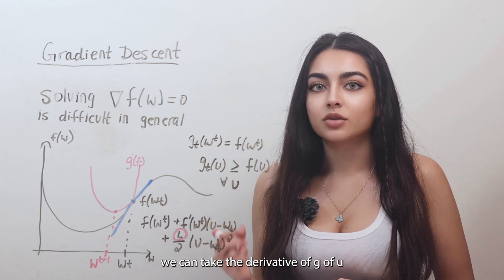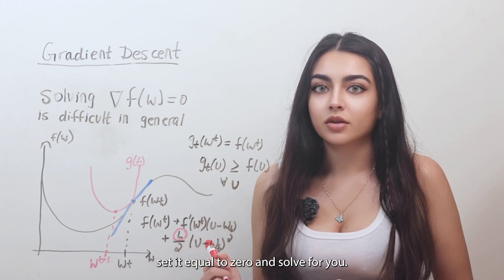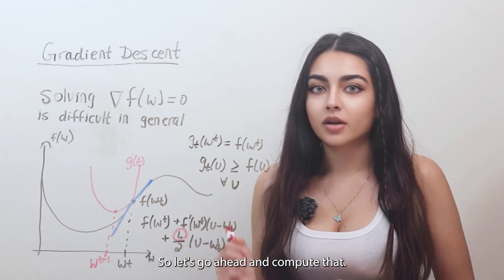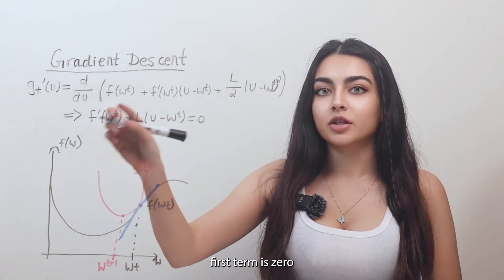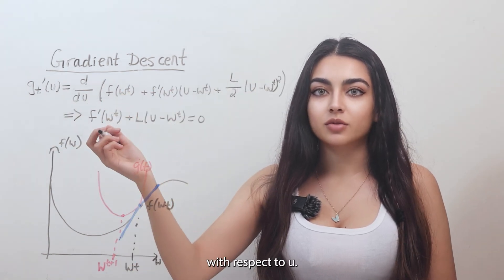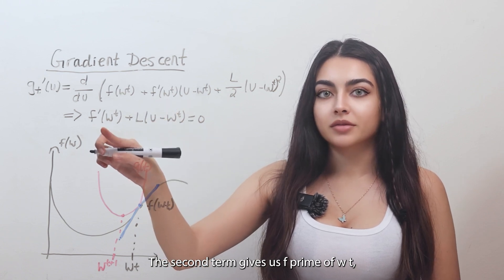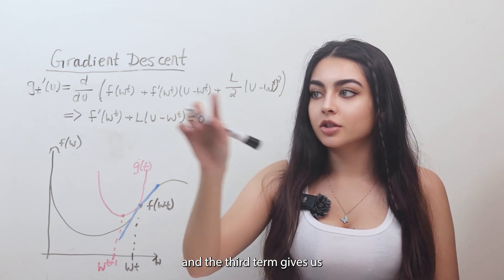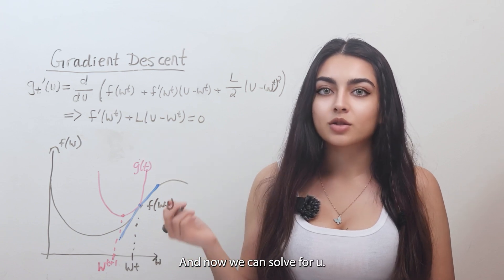And to do that, we can take the derivative of gt of u with respect to u, set it equal to 0, and solve for u. So let's go ahead and compute that. So the derivative of the first term is 0 because it is a constant with respect to u. The second term gives us f' of wt. And the third term gives us L times u minus wt. And now we can solve for u.